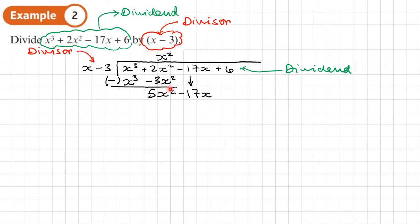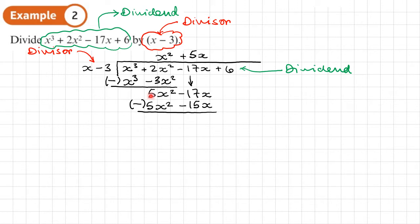How many times does X go into five X squared? It goes five X times, so we write plus five X above the X column. Step two: multiply five X by the divisor — five X times X is five X squared, and five X times negative three is minus 15X. Underline and subtract: five X squared minus five X squared is zero. Then negative 17X minus negative 15X is negative 17 plus 15, giving negative two X. Bring down the six.